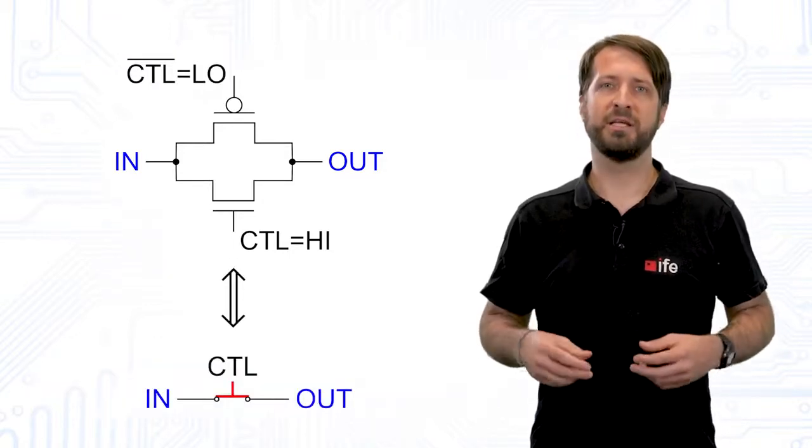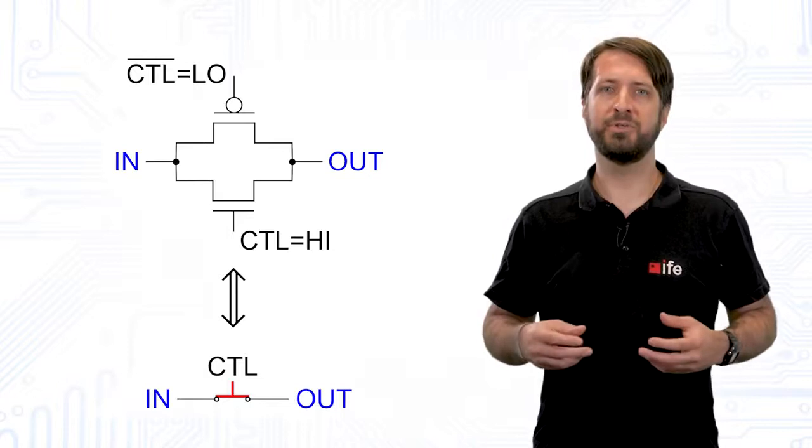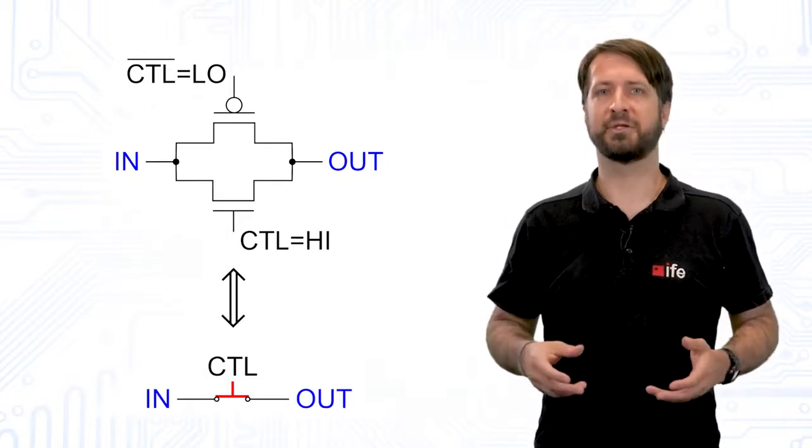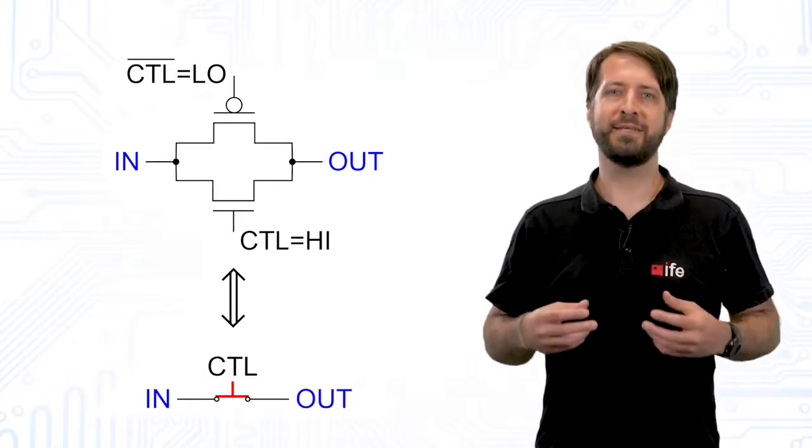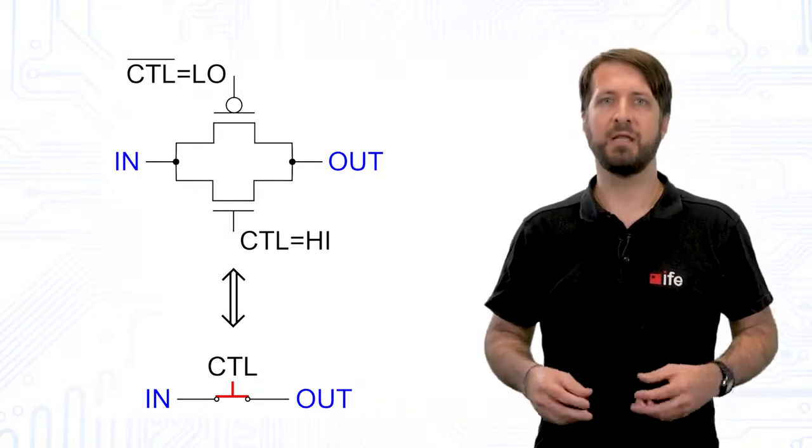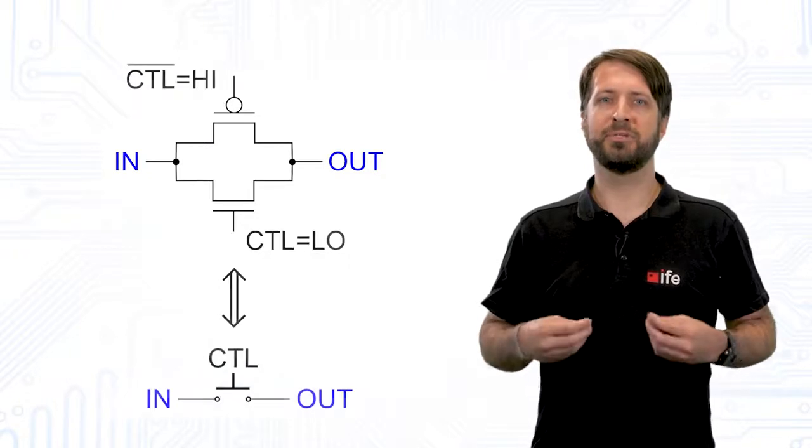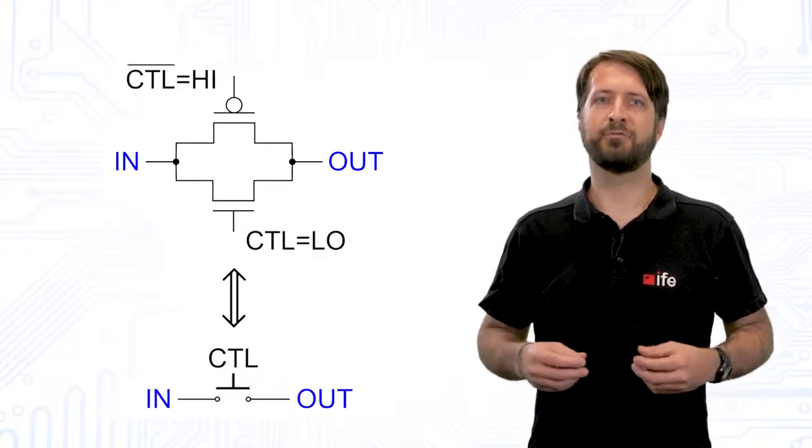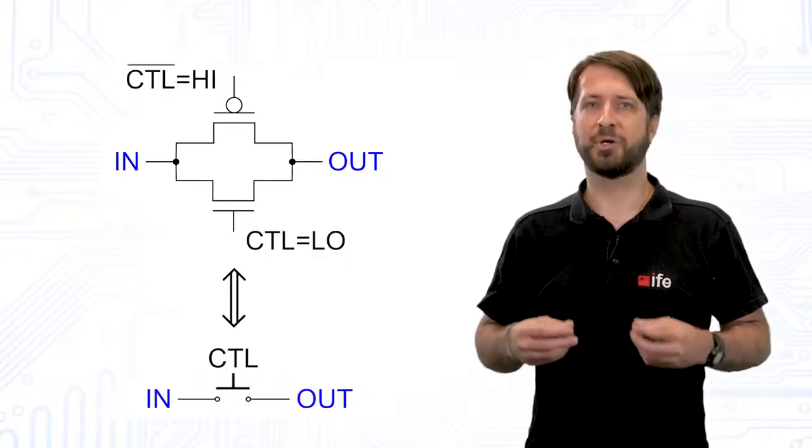We can break this connection by applying low-level as a control signal. Now the output will always float, regardless of what signal is applied to the circuit's input.